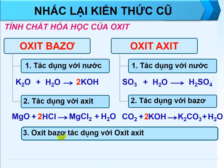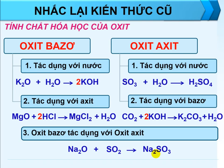Tính chất thứ 3, 2 loại oxit có thể tác dụng với nhau. Một số oxit bazơ có thể tác dụng được với một số oxit acid để tạo thành muối. Na₂O cộng SO₂, chúng ta thu được muối Na₂SO₃. SO₂ thì gốc acid là gốc SO₃ hóa trị 2, Na hóa trị 1, vậy muối thu được chính là Na₂SO₃. Ở đây chỉ là một số phương trình rất cơ bản, còn rất nhiều phương trình khác, các em có thể về làm bài tập thêm trong sách giáo khoa để củng cố và nhớ được bài lâu hơn.